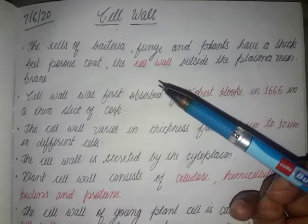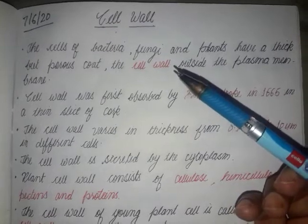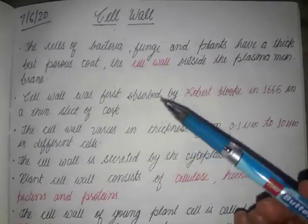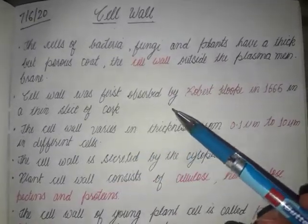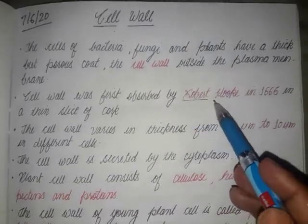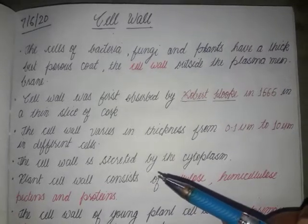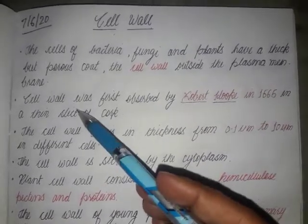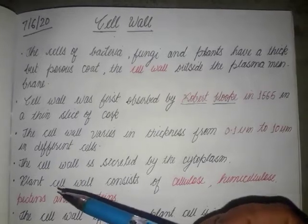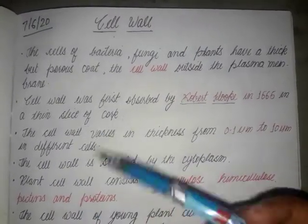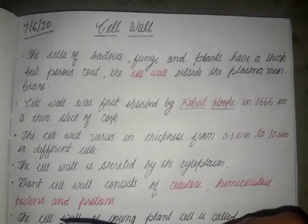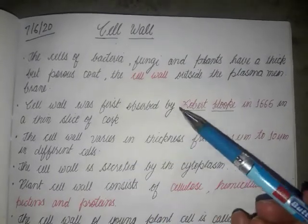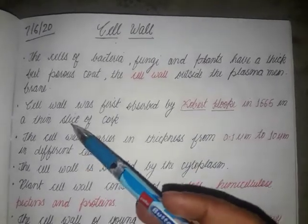The most important point is that the cell wall was first observed by Robert Hooke. Robert Hooke was the scientist who discovered the cell in 1665, and at that time he also observed the cell wall. The cell wall was first observed in the thin slice of cork, and cork is a plant cell, so it obviously has a cell wall.